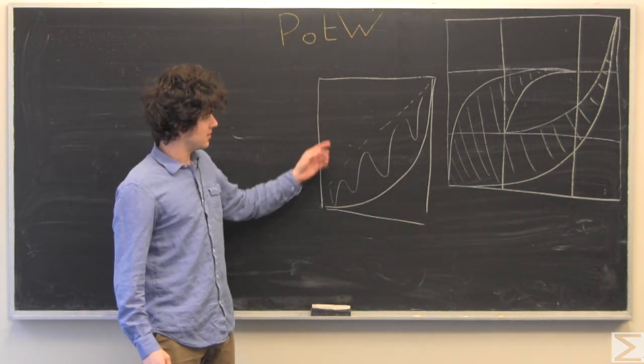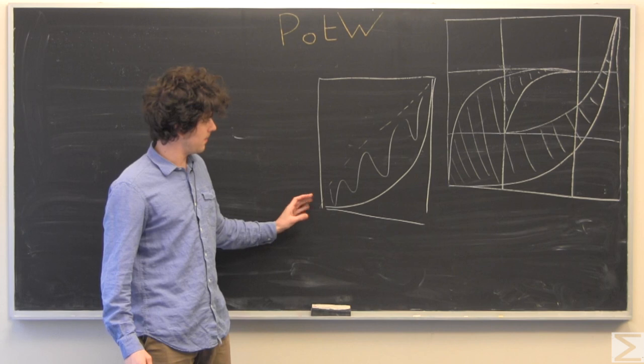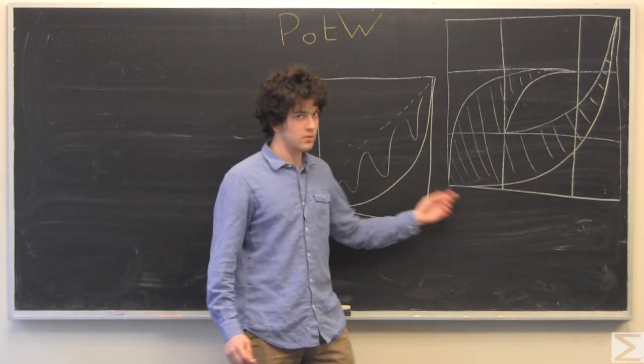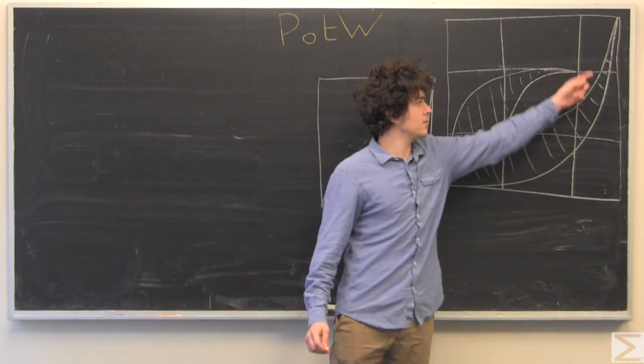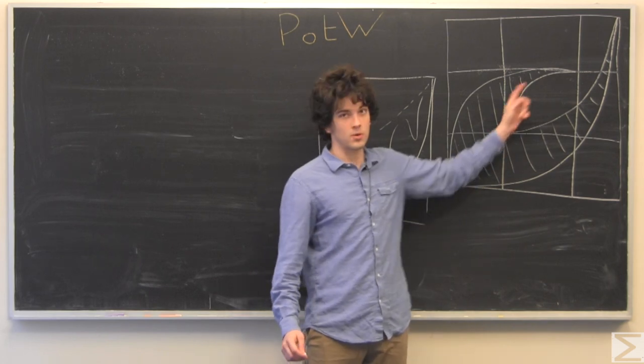So you would section it off like this, so you have a big quarter circle here, a kind of medium one here and here, and a small one there.